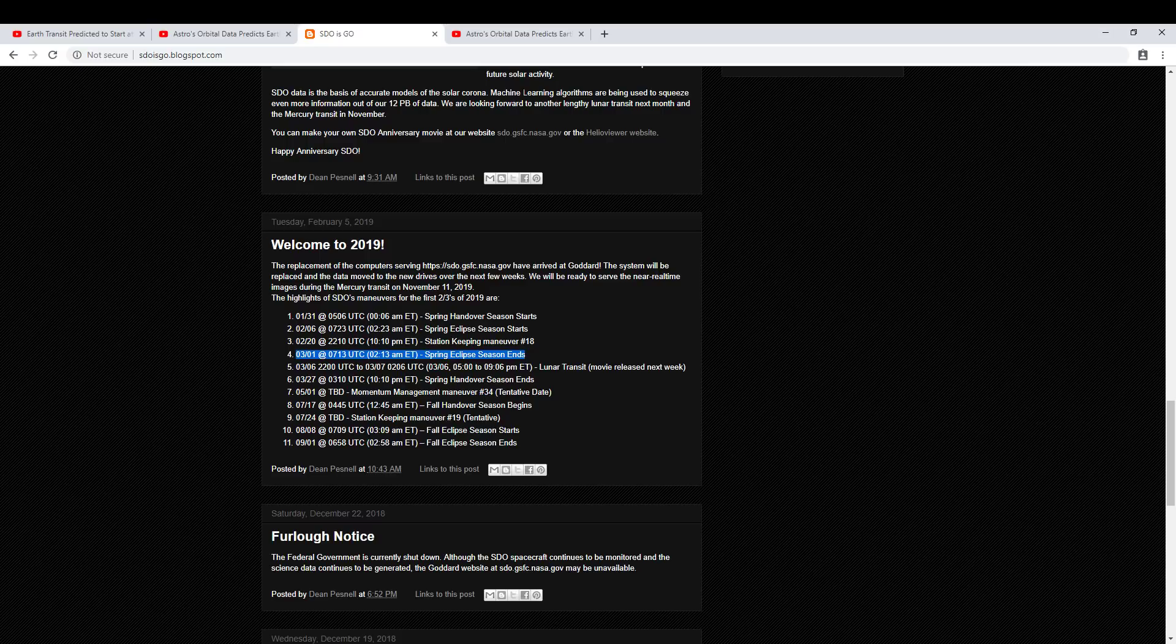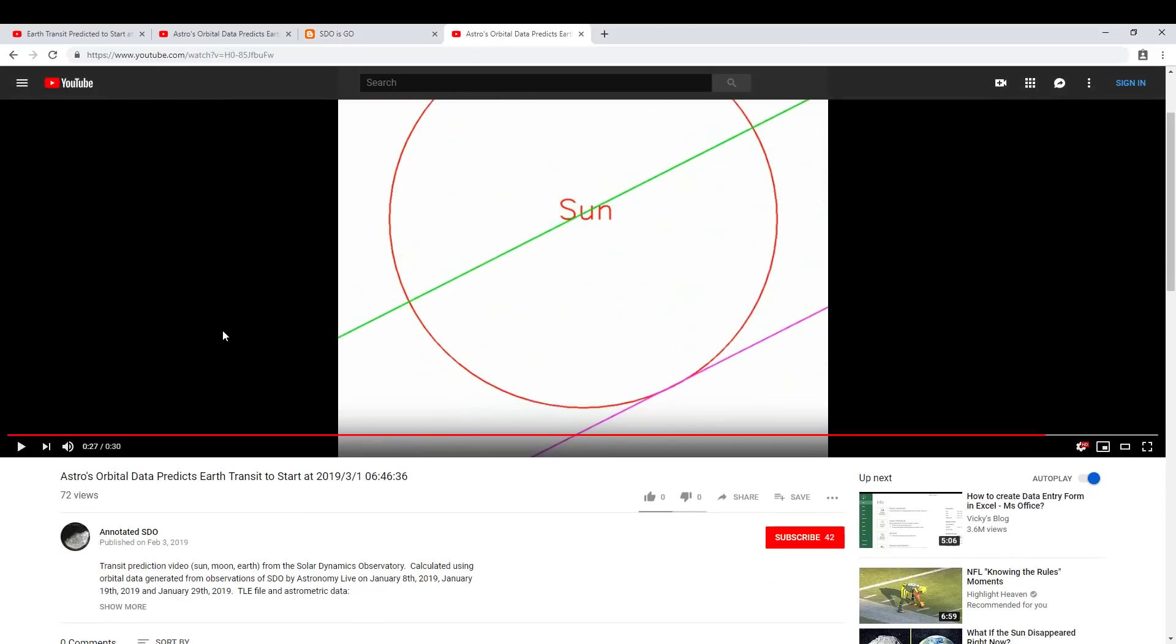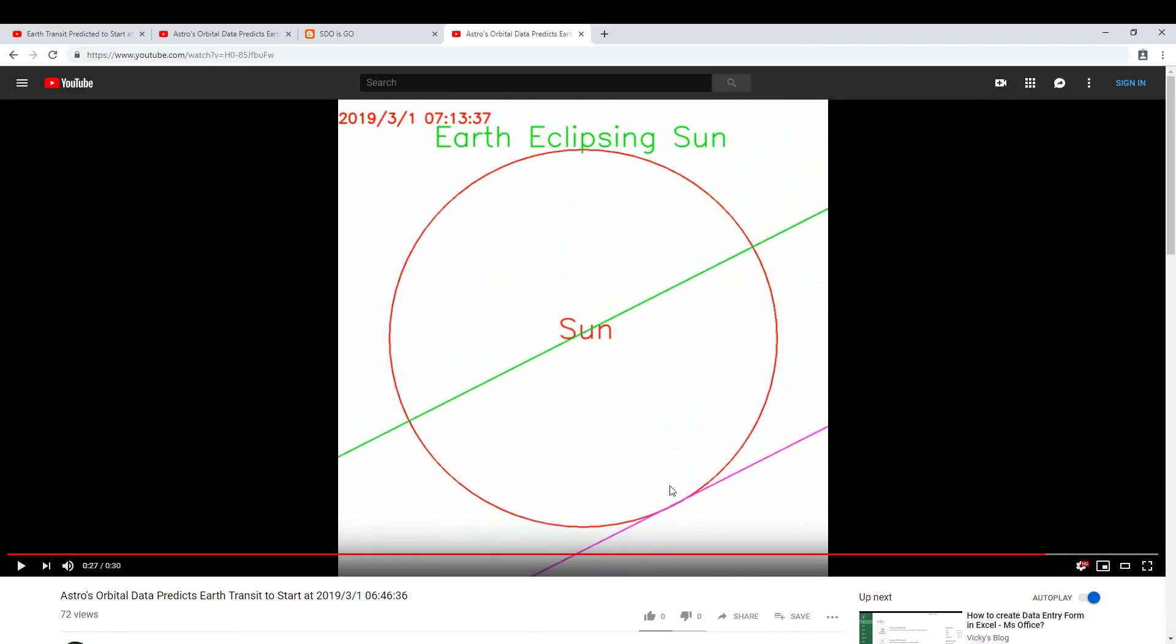If you go to my prediction for that time, 7:13 Universal Time, on the Annotated SDO webpage, even using my own orbital data, you can see that at that time, this purple line forms a tangent with the sun. This purple line represents Earth's limb, the physical surface of Earth.